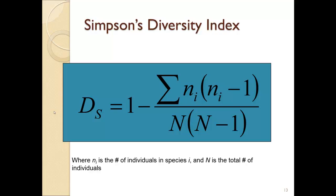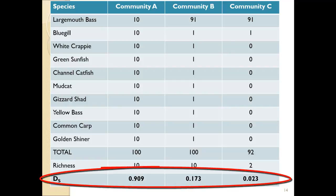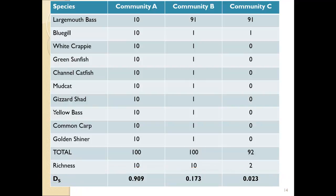Here is the formula for Simpson's, and this is what we're going to use in Microsoft Excel to calculate diversity. In this example, small n is the number of individuals in each species, and big N is the total number of individuals in the community. If we go back to our original example, the very bottom row shows the calculation for Simpson's diversity for each community. In community A we have a very high value; in community B the value is much lower; and in community C the value is extremely low.